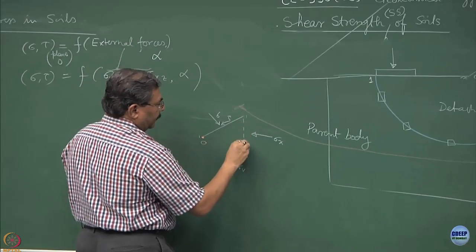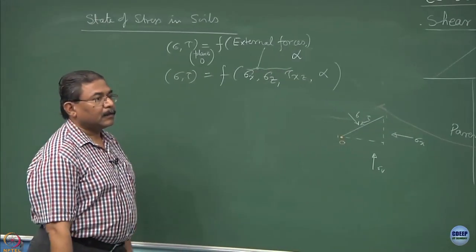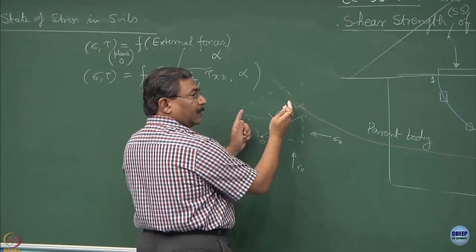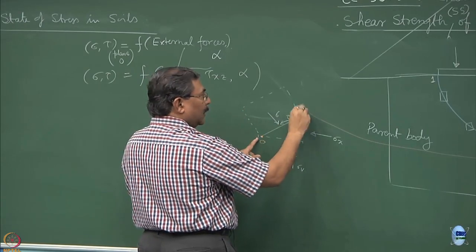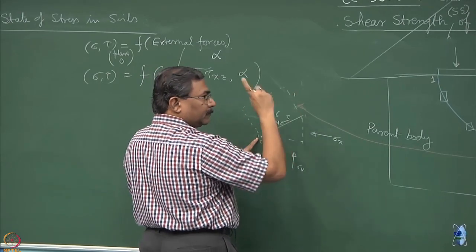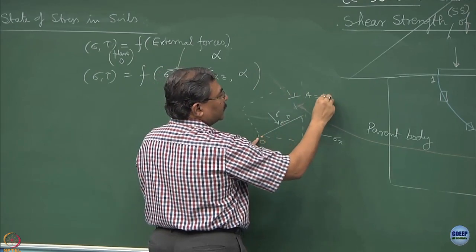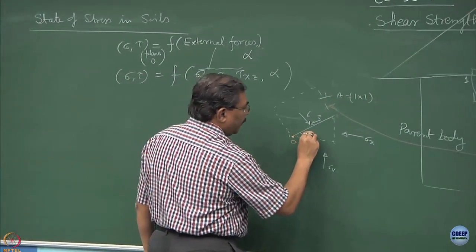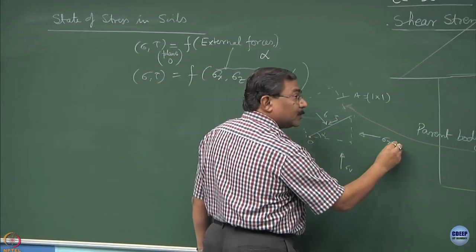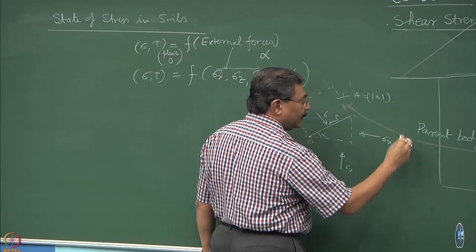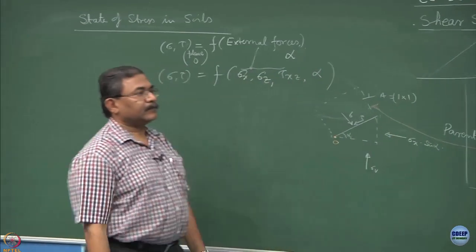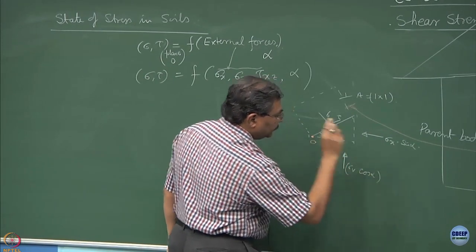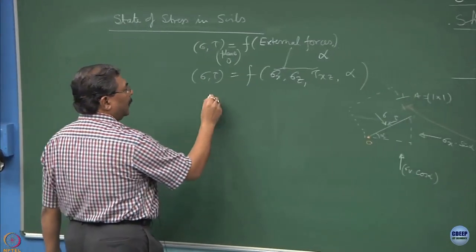Now, if I take the projection of this plane and if I assume that this plane extends up to unity in the third direction, and this is of unit length and this is also unity, area of cross section is 1. Area of cross section of this is 1 is square 1. If this has the angle of alpha, this is going to be the horizontal force is going to be now sigma x multiplied by sin alpha and this is sigma v multiplied by cos alpha. Can you do simple equilibrium?